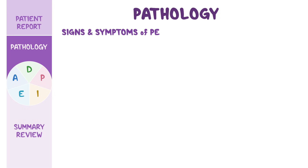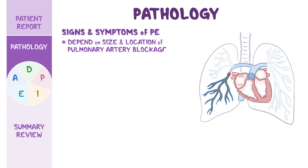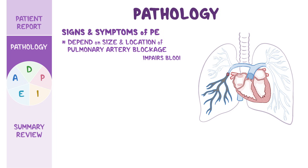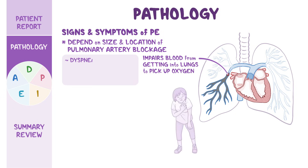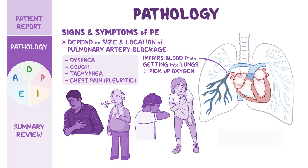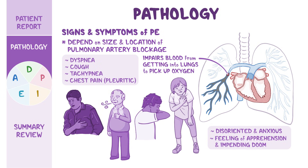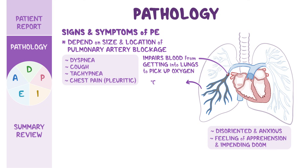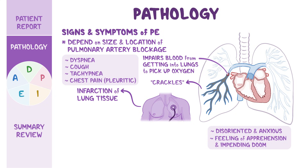Signs and symptoms of a pulmonary embolism depend on the size and location of pulmonary artery blockage. Even a small blockage impairs blood from getting into the lungs to pick up oxygen. Impaired oxygenation may cause a sudden onset of dyspnea, cough, tachypnea, and chest pain described as pleuritic — a sharp pain felt when inhaling and exhaling. The patient may become disoriented and anxious from hypoxemia, or report a feeling of apprehension and impending doom. As inflammation sets in, fluid buildup causes crackles, which can be heard upon auscultation.